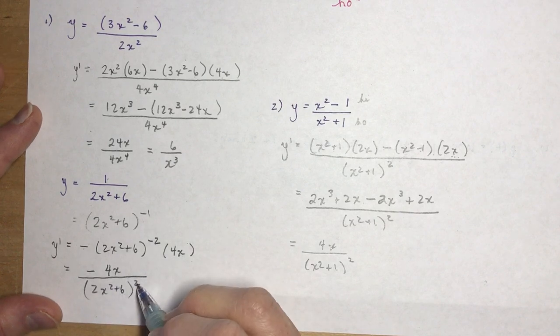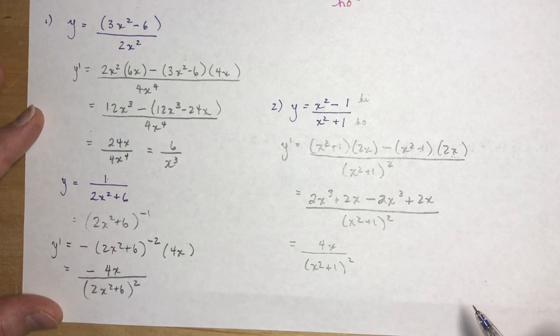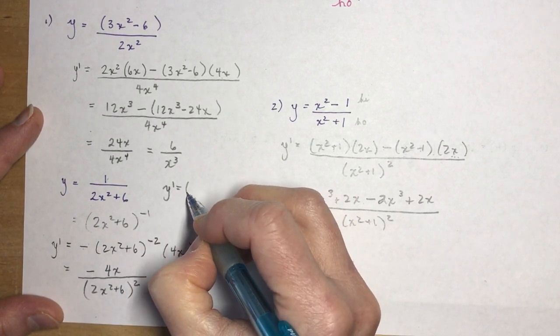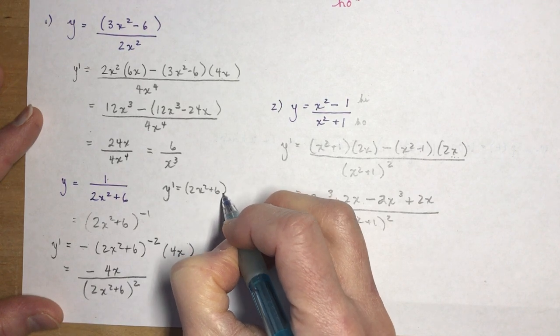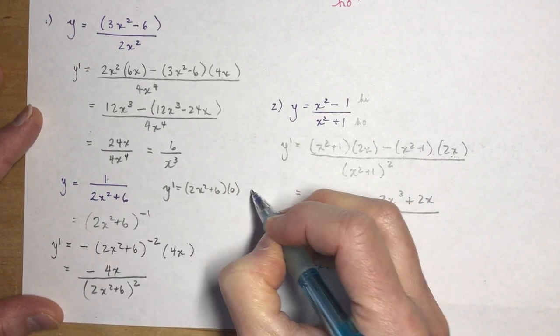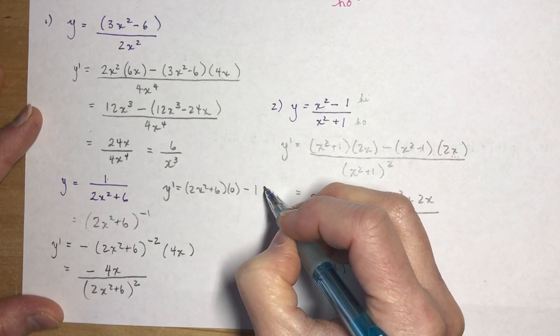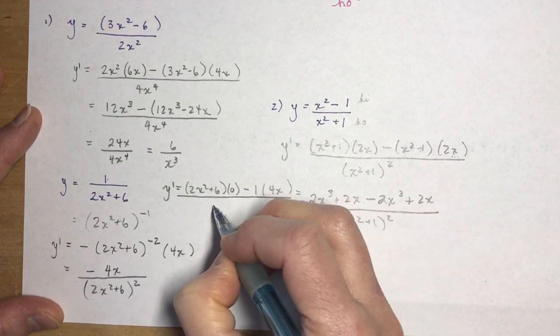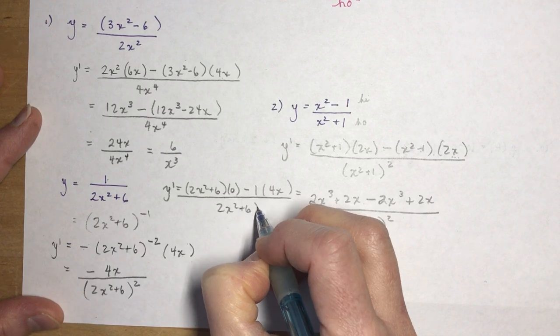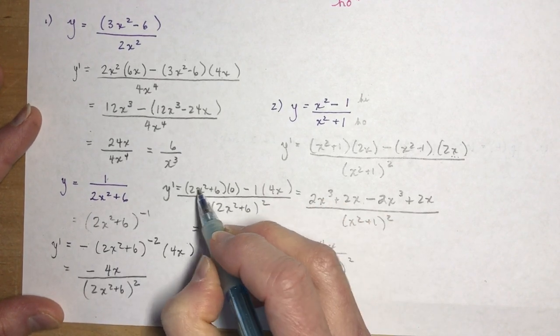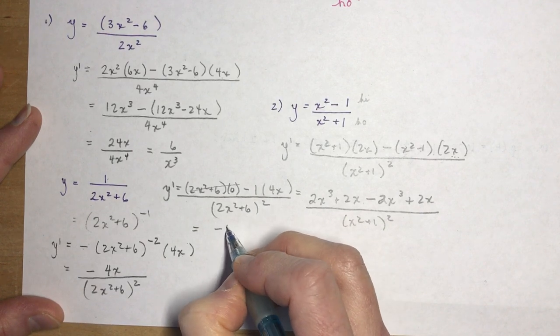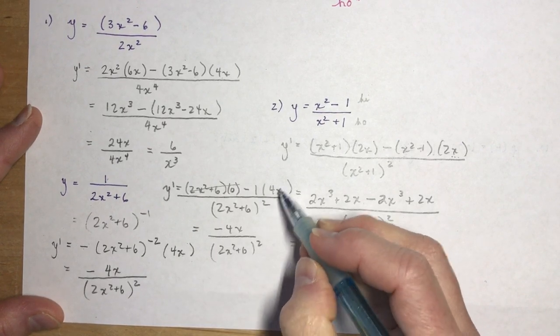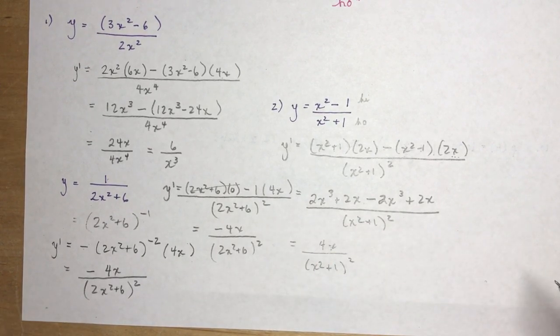Let's see if I did it as ho-di-hi. I would have ho d-hi - derivative of 1 is 0 - minus hi d-ho - derivative of the bottom is 4x - all over ho squared (2x² + 6)². This is all 0, and I get -4x over (2x² + 6)². So that was actually easier, I think.